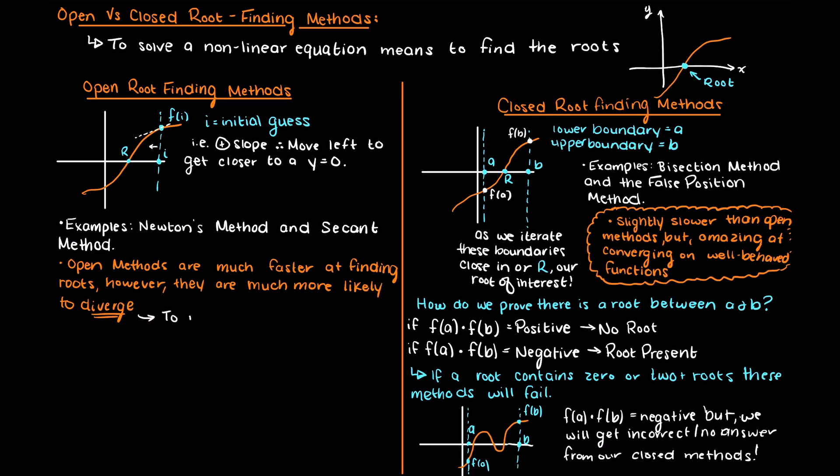To mitigate the potential of divergence we need to select a starting guess that is close to our root and try to ensure that our function is well behaving.